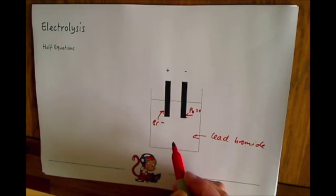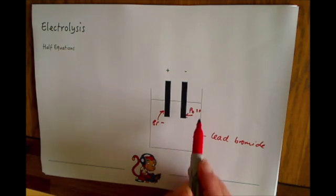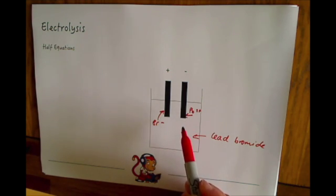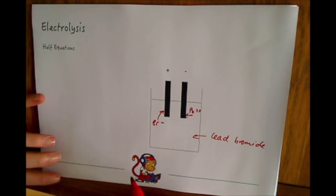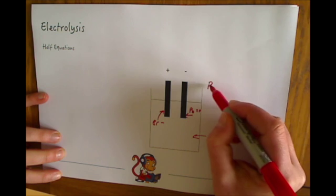Now with half equations, you need to be talking about what these ions here and whether they're gaining or losing electrons. We're not talking about writing a complete equation like we normally would write for what's going on. So our general equation for the whole thing would be looking at lead bromide...